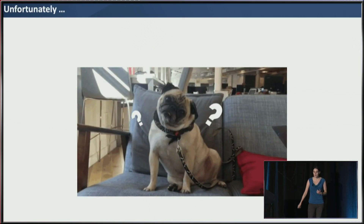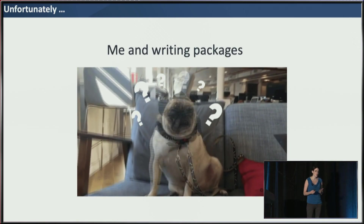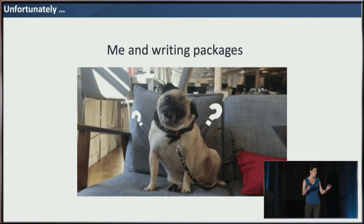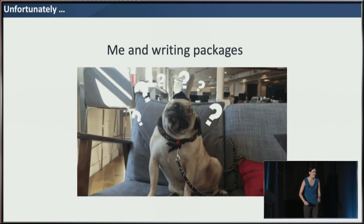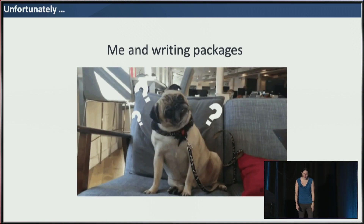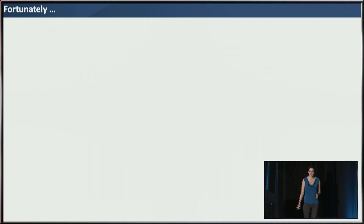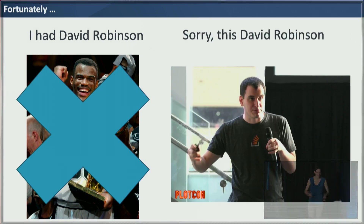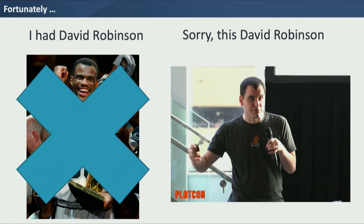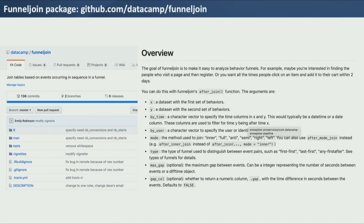Unfortunately, I faced a bit of an issue — writing packages and me were not well acquainted. I had even written a blog post a couple of years ago titled 'writing my first R package, part one,' where I talked about how I'm going to write this R package — and there was never a part two. There actually still is not. Fortunately, I had David Robinson at DataCamp — our chief data scientist, and also my brother. He is very experienced in writing packages. So one day we set up a hackathon for him, me, and one of the other growth team members to write the package FunnelJoin, which is available on GitHub.